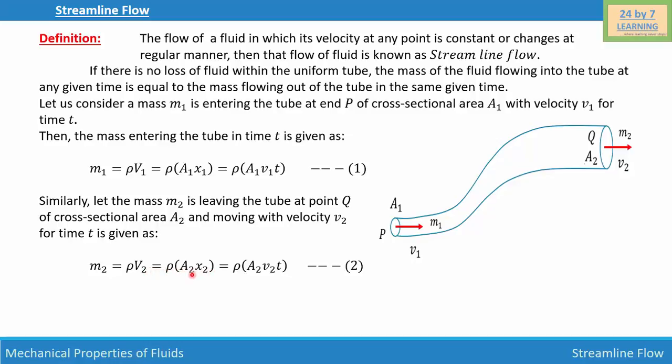Where A₂ is the area of cross section at point Q, which is this area right here, and x₂ is the distance traveled in time t. Distance is basically velocity times time so we can write that equals ρA₂v₂t. Let that be equation number two.